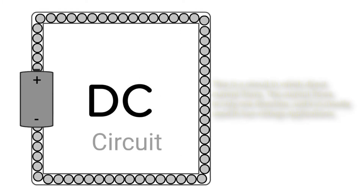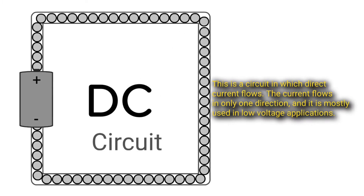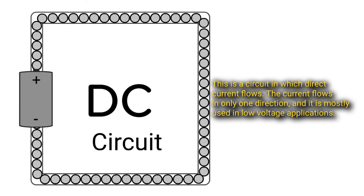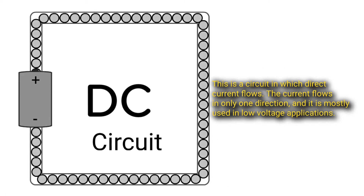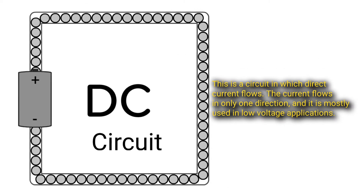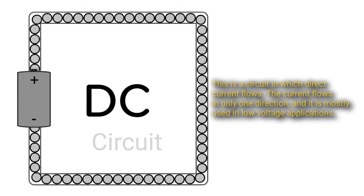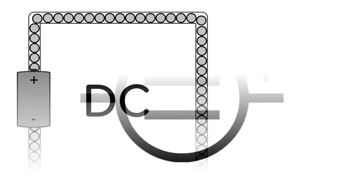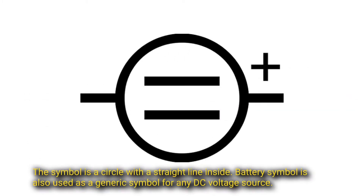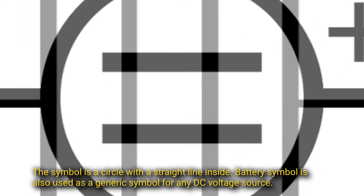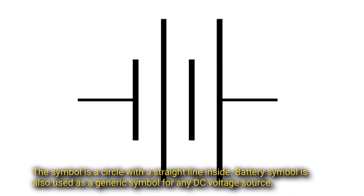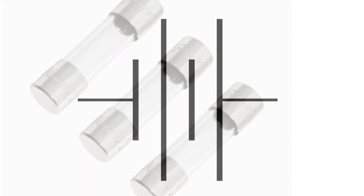DC circuit is a circuit in which direct current flows in only one direction, and it is mostly used in low voltage applications. The symbol is a circle with a straight line inside. The battery symbol is also used as a generic symbol for any DC voltage source.